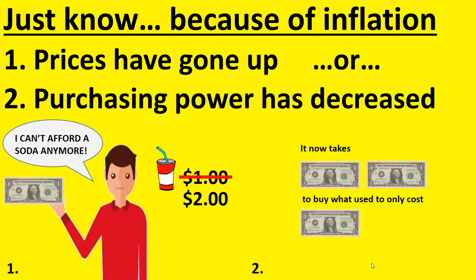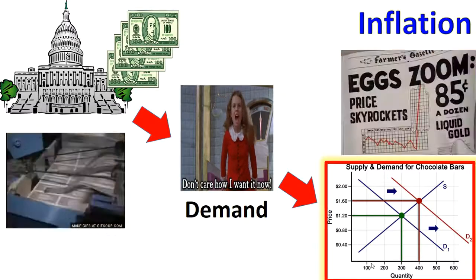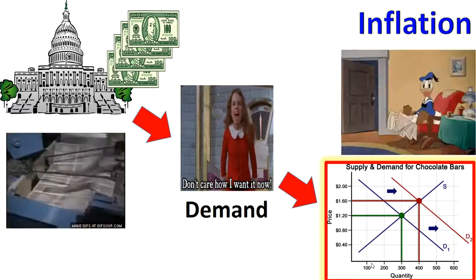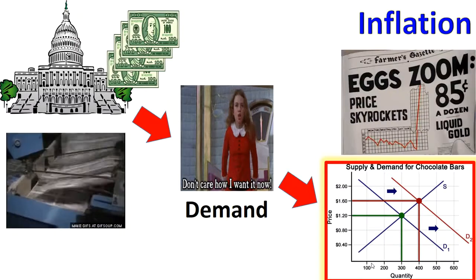The general rise in prices happens because they printed more money, which created more demand, and more demand drives prices up. Or you can simply look at it as the dollar buys less — it's the same thing. What I really want to talk about is inflation as a hidden tax, not so much what inflation is.